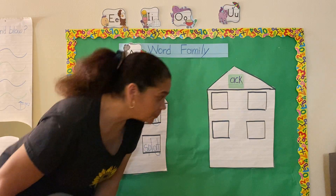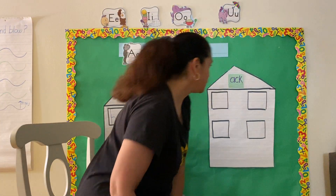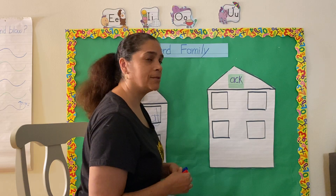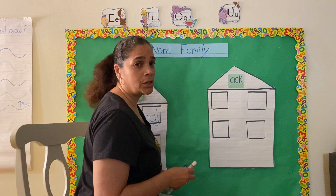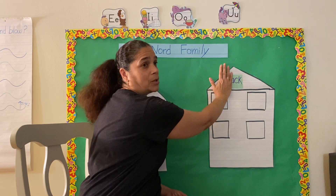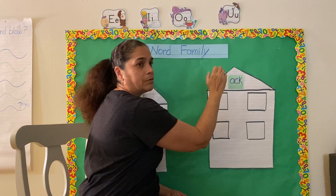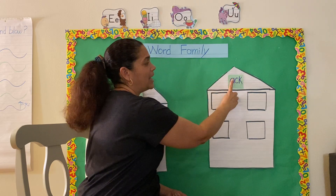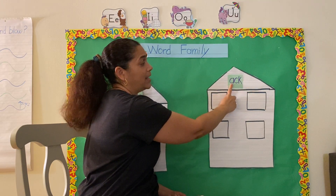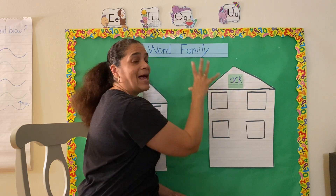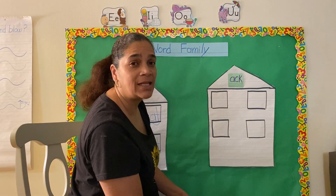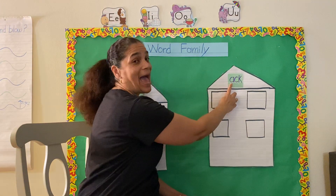Now, this one is a little tricky because we learned during class that CK at the end of a word just makes one sound: K. But we have that vowel A — short vowel A — in front of our CK. So let's try that together: A-K. So our second word family for today's lesson, Pre-K, is A-C-K: ack.